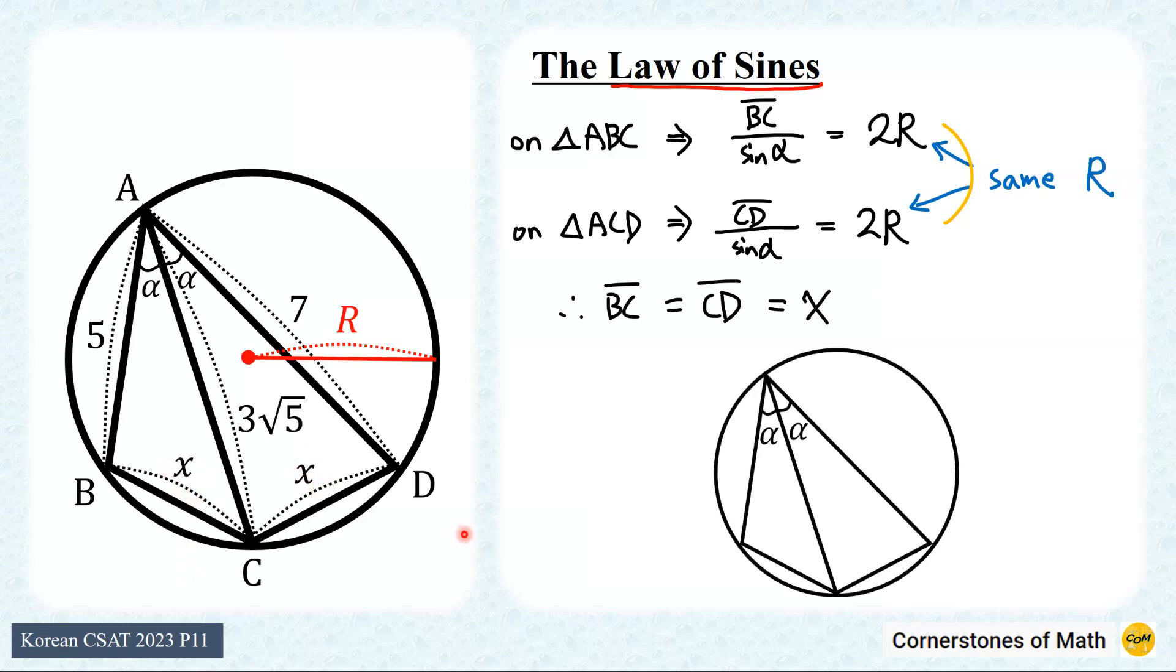But you don't actually have to use the law of sines to find out that BC equals CD. Some of you might already know the basic properties related to inscribed angle in a circle, which is, these two arcs have the same magnitude of the inscribed angle, meaning that their center angles are also equal, which is twice the inscribed angle. So you can easily see that these two arcs have the same arc length, and these two cords also have the same length.